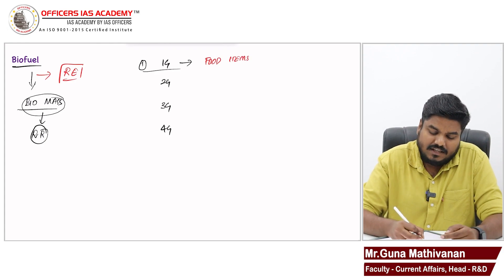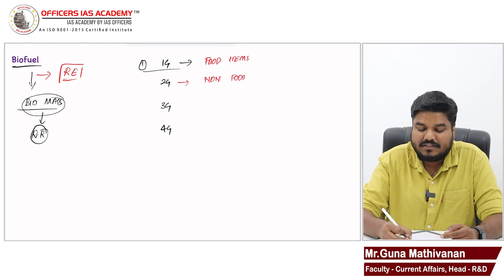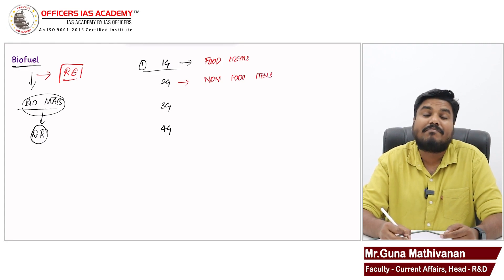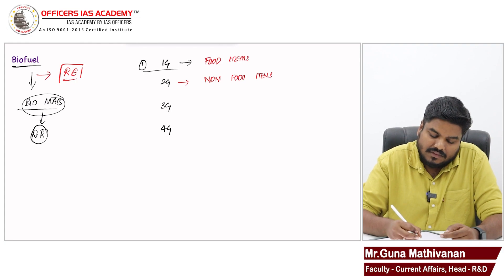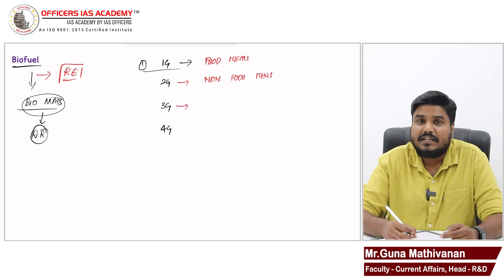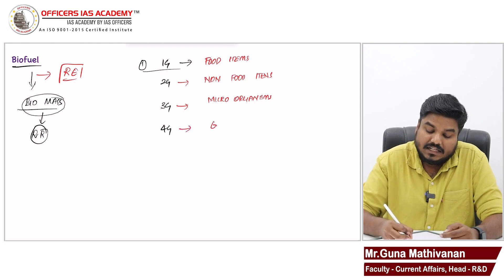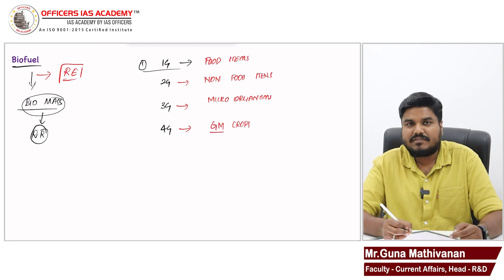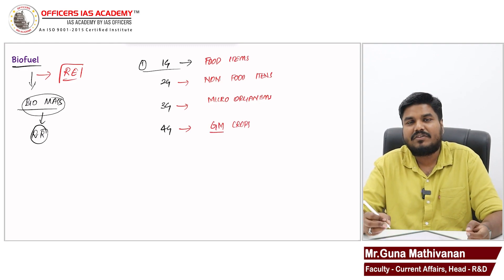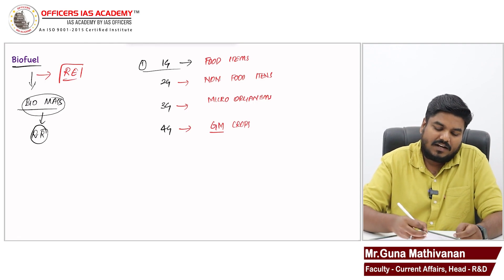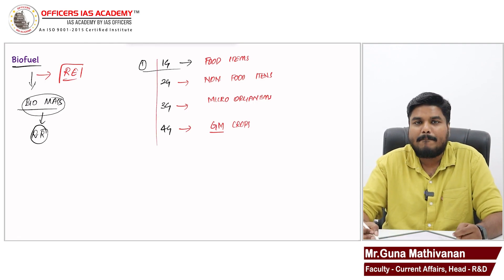Now, second generation biofuel, these are biofuel. Now, third generation biofuel, these are derived from microorganisms like algae. Now, 4G that is derived from genetically modified crops. In some other video, I will be discussing about genetically modified crops in detail. So, these are the four categories of biofuel.